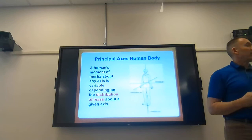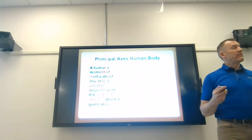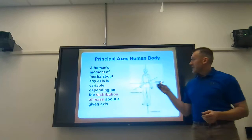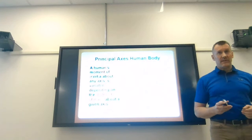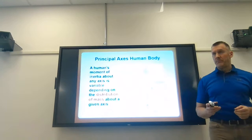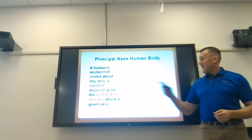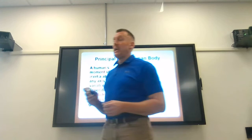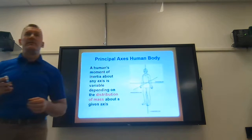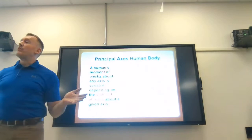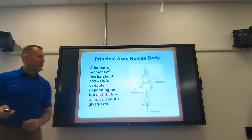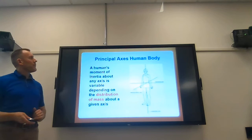Our bodies can have up to three axes about which the mass of our bodies are distributed. The transverse axis is for the sagittal plane - that's front-to-back movements. The axis has a 90-degree relationship to the plane of motion. For the frontal plane we have the anterior-posterior axis. For the transverse plane we have the longitudinal axis - think about rotation movements like swinging a baseball bat or doing a Russian twist with a medicine ball in the transverse plane around the longitudinal axis.